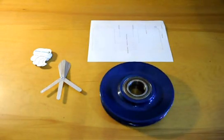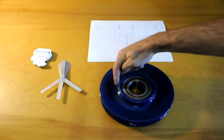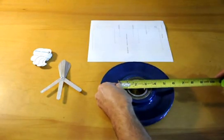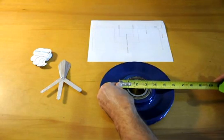Next you will need to measure the hub diameter and here as you can see the hub diameter is three and three quarters of an inch.